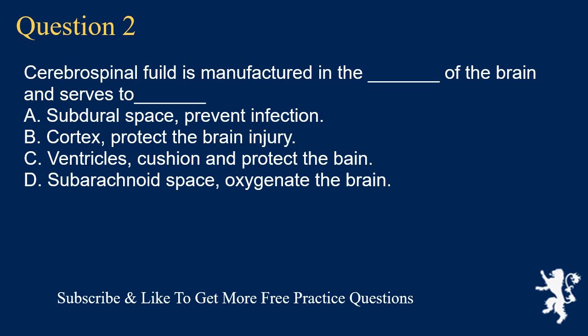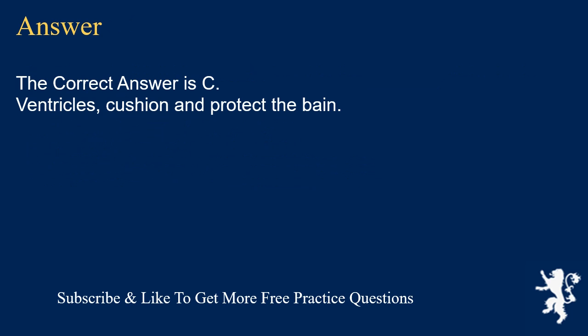Question 2. Cerebrospinal fluid is manufactured in the underscore of the brain and serves to underscore. A. Subdural space — prevent infection. B. Cortex — protect the brain from injury. C. Ventricles — cushion and protect the brain. D. Subarachnoid space — oxygenate the brain. The correct answer is C. Ventricles — cushion and protect the brain.